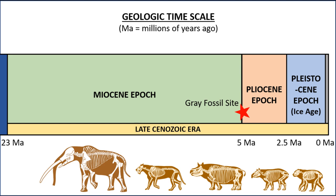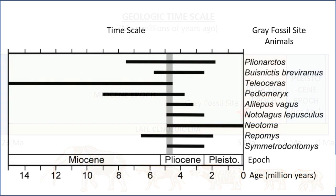This makes the Gray fossil site very special. There are no other known fossil sites of this age in the state of Tennessee or in our neighboring states. That means Gray is our only window into this time period for hundreds of miles in any direction. For paleontologists, it's a chance to study an ancient environment no one's ever seen before. More recently, our scientists have been identifying the small mammals of the Gray fossil site, including rodents and rabbits, which have helped narrow down this age even further.